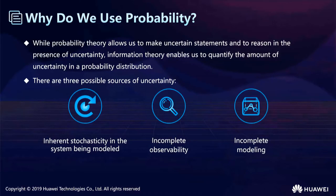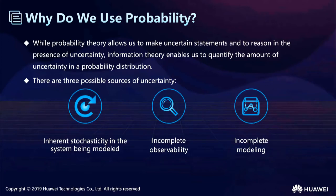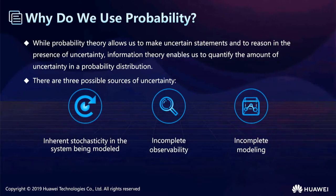First, let's make clear why we use probability theory. There are too many uncertain things in our life. Probability theory allows us to make uncertain statements and to reason in the presence of uncertainty. Generally speaking, the theory can describe uncertainties with numbers, so that we will have a feeling about the uncertainties. There are three sources of uncertainty: uncertain structure states in the system being modeled, incomplete observability, and incomplete modeling.